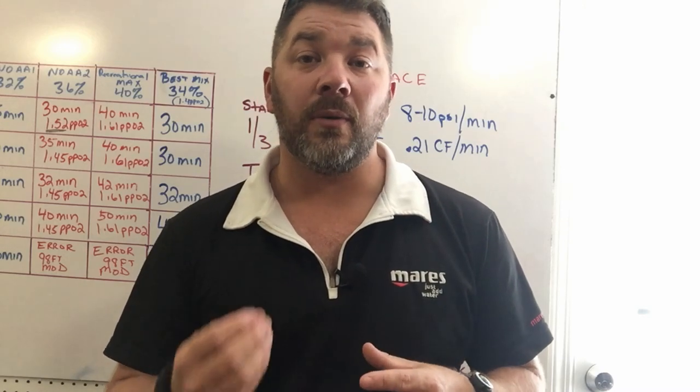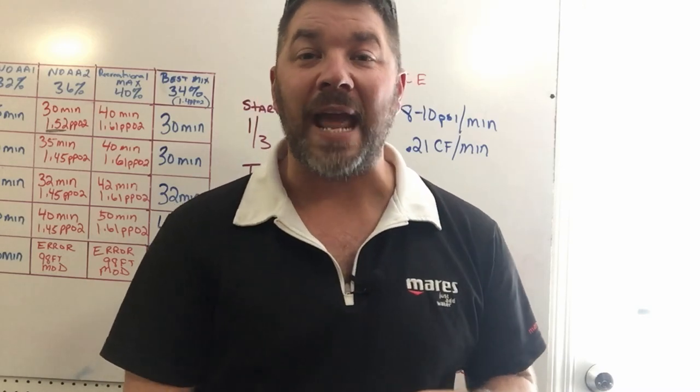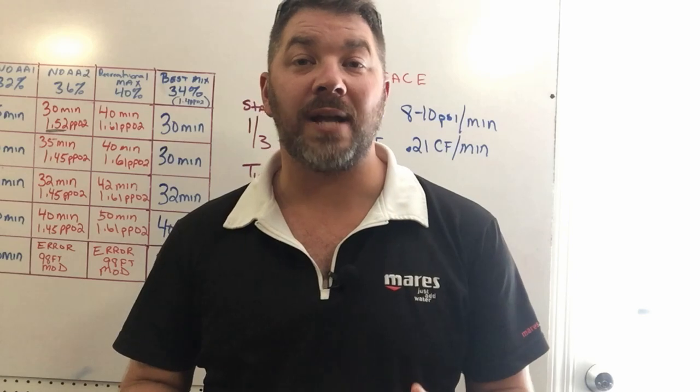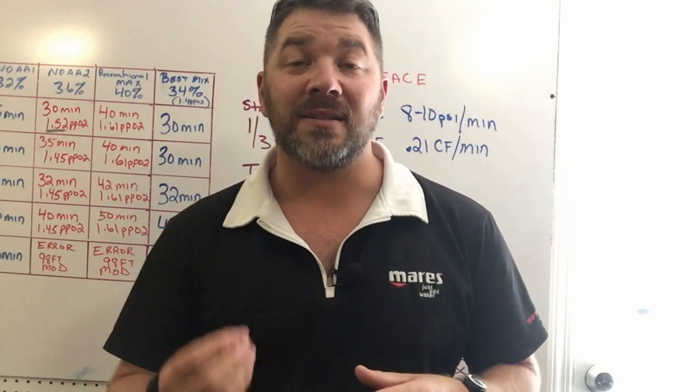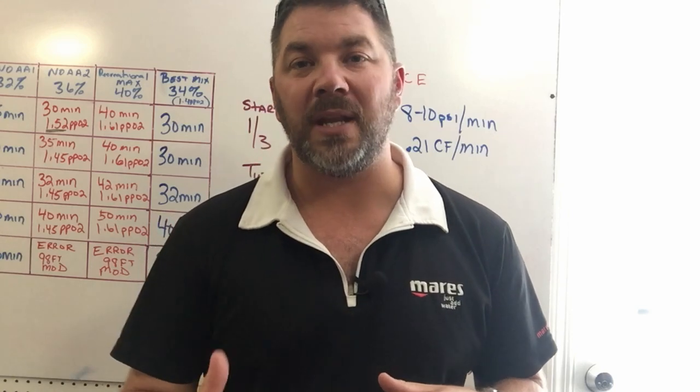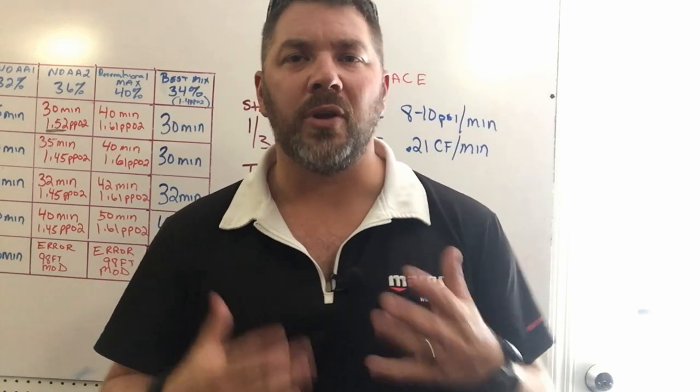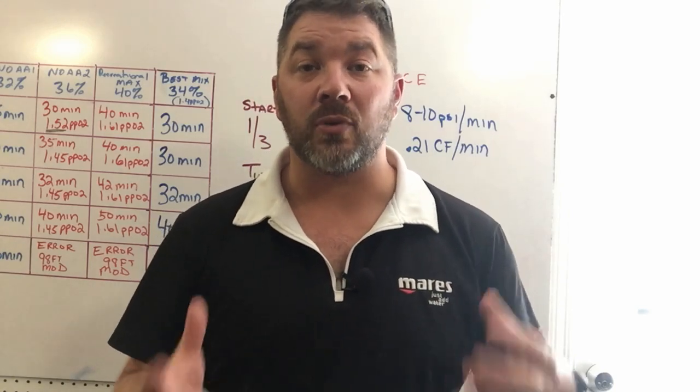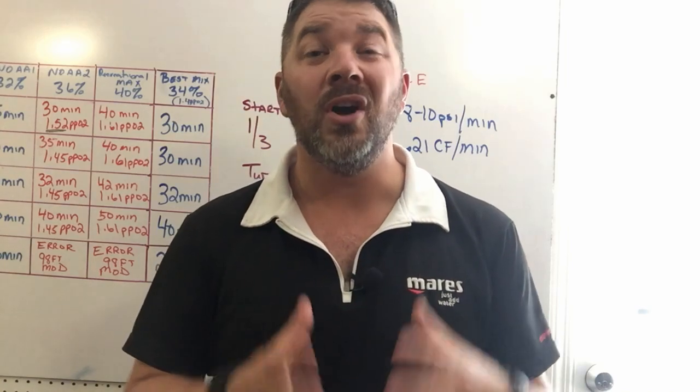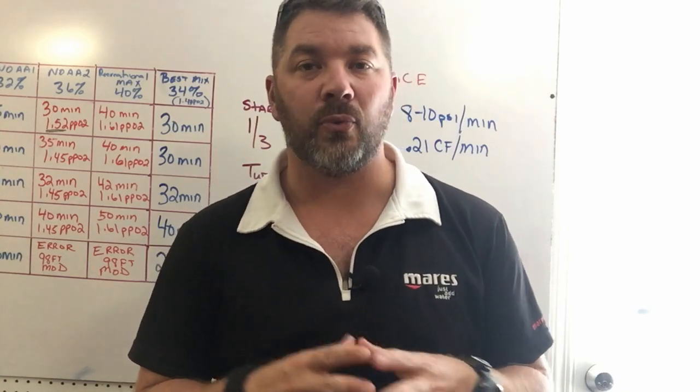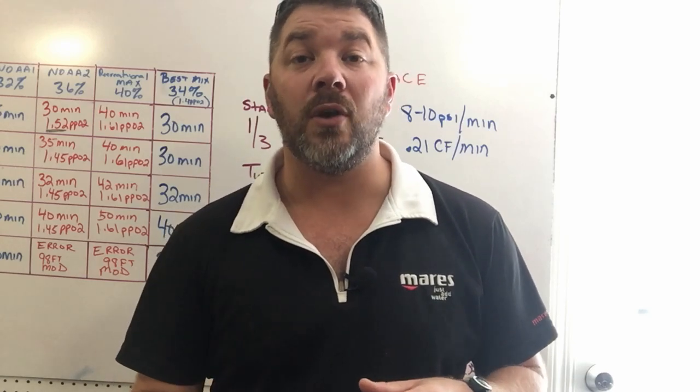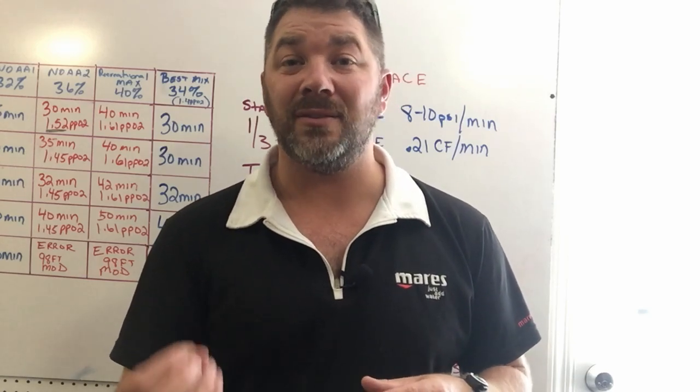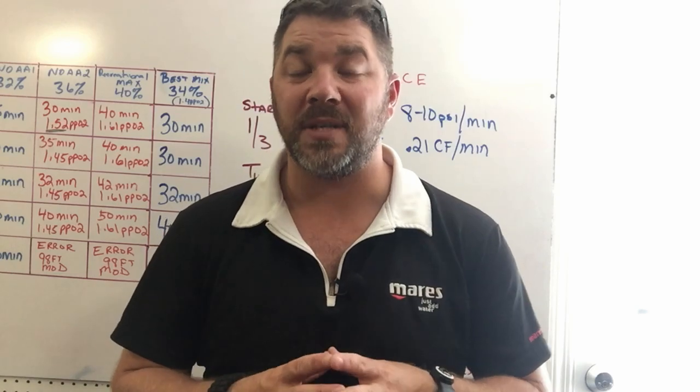In the first part we determined that we were going to a depth of 100 feet and that 34% enriched air nitrox is going to be the best blend for that particular depth, giving us a maximum of 30 minutes underwater before putting our body into decompression. We're still only planning recreational no decompression dives here, so what we're going to focus on in this video is how to determine what cylinder size is going to be best for that particular dive.